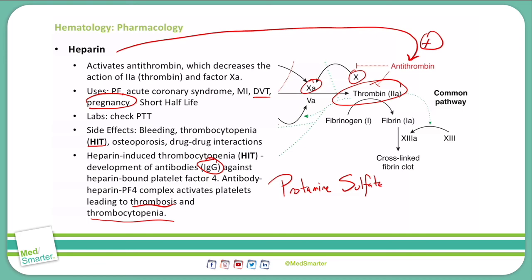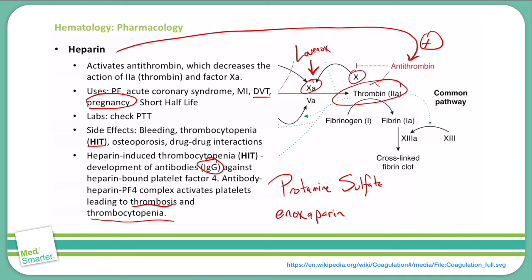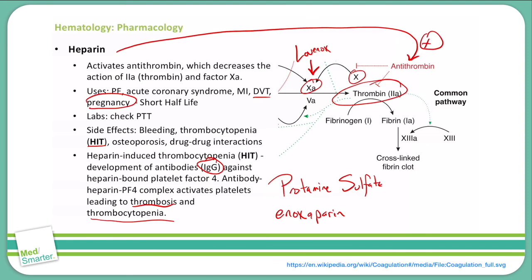One of the most commonly used heparins is the low molecular weight heparin known as enoxaparin, also known by its brand name Lovenox. This specifically works on factor 10a. One great thing about low molecular weight heparins is that they undergo renal clearance versus hepatic clearance for unfractionated heparins, so they have no hepatic effect.